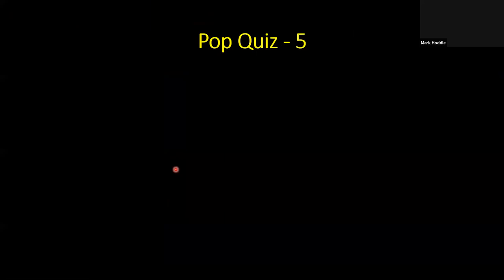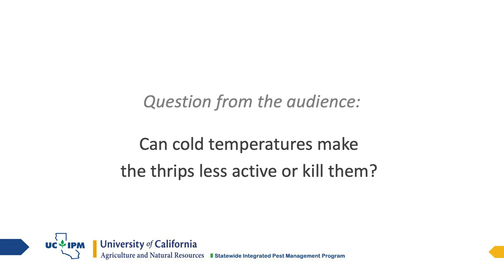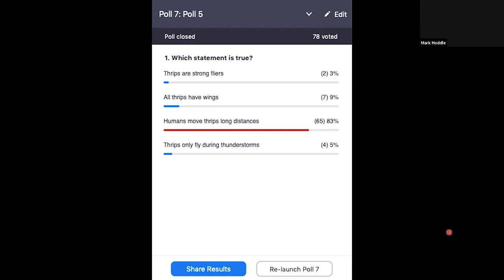Pop quiz number five: Which statement is true? Thrips are strong flyers; all thrips have wings; humans move thrips long distances; or thrips only fly during thunderstorms? The correct answer is: humans move thrips long distances, often accidentally through the trade in live ornamental plants. On a related question — cool temperatures can certainly slow thrips down, but it has to get really cold to kill them, and if it gets that cold it's probably going to kill your plants too, especially subtropical crops like citrus and avocados.